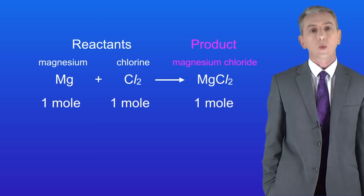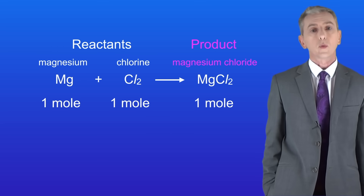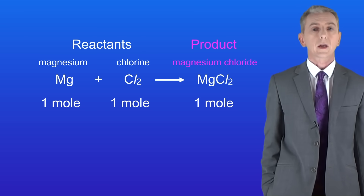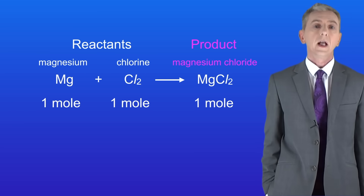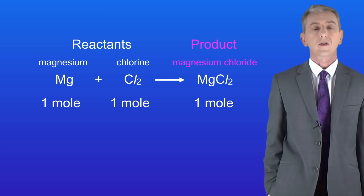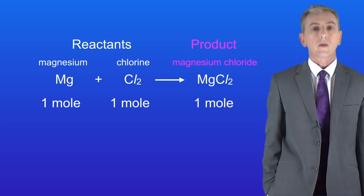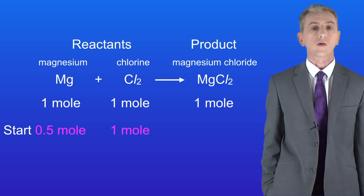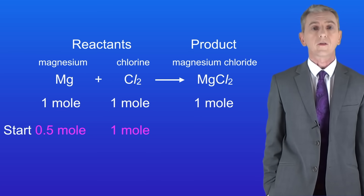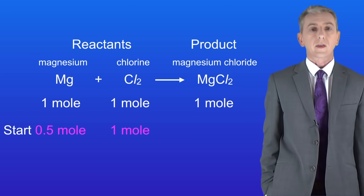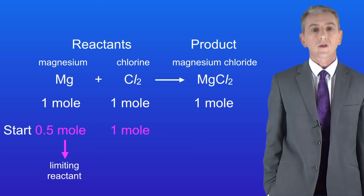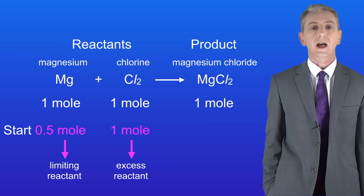Now if we used exactly one mole of magnesium and exactly one mole of chlorine, then at the end of the reaction we'd make exactly one mole of magnesium chloride, and we'd have no reactants left over. However in most chemical reactions it's just not practical or convenient to measure your reactants as carefully as this, so we normally use more of one reactant than the other. For example in this reaction we might use 0.5 moles of magnesium but one mole of chlorine, to make sure that all of the magnesium fully reacts. We call the reactant that's fully used up the limiting reactant — in this case that's the magnesium. The reactant that's not used up is called the excess reactant, and that's the chlorine.